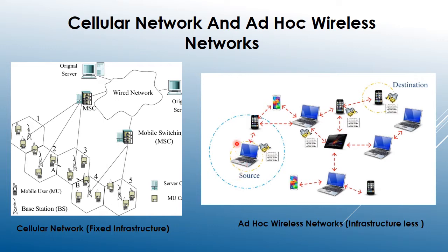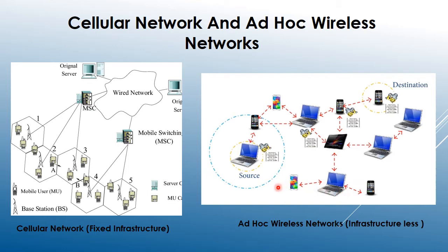For example, a source node wants to transmit information to a destination node through multiple hops. A laptop transmits information to a smartphone, then another laptop, then another smartphone, until it finally reaches the destination. This is called a multiple-hop architecture, whereas the cellular network uses a single-hop architecture.